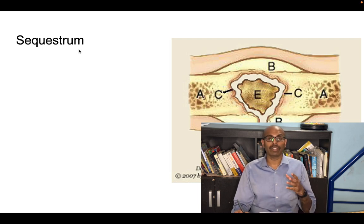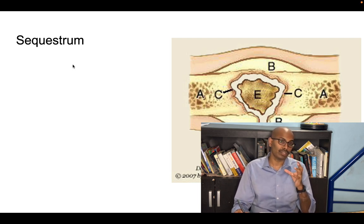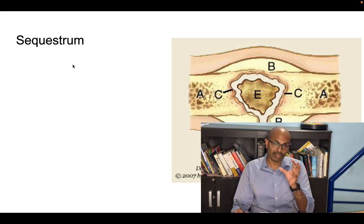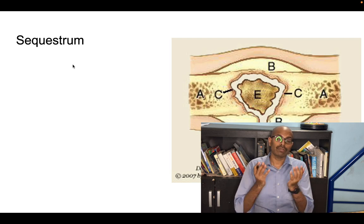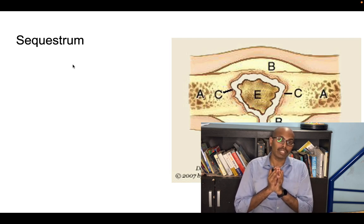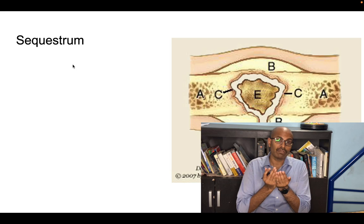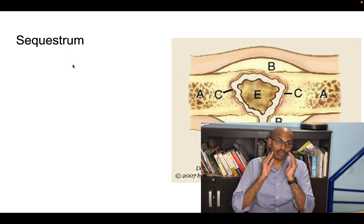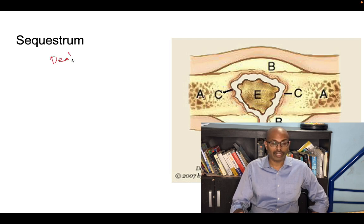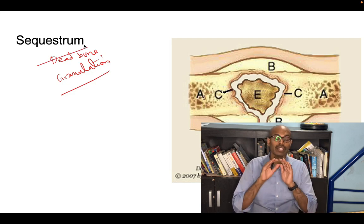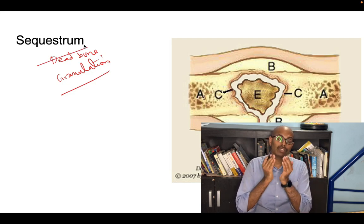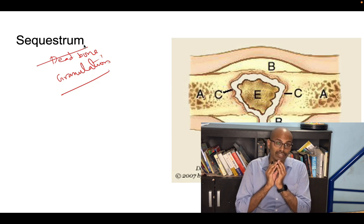So what is sequestrum? Sequestrum is what happens in chronic osteomyelitis. Infection happens in the bone and a small piece of bone gets cut off from its blood supply — this is called a sequestrum. This forms as a nidus for the osteomyelitis, and the body tries to wall off this infected area. So basically, sequestrum is a dead piece of bone surrounded by granulation tissue.